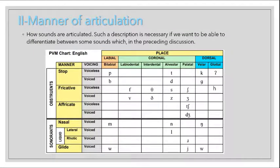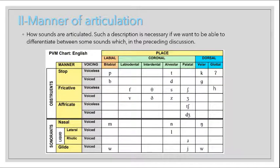Manners of articulation, as we've said before, is how sounds are articulated. Such a description is necessary if we want to be able to differentiate between sounds. In the preceding discussion we dealt with the place of articulation, and we've seen that many sounds share the same labels. So how do we differentiate between these sounds?